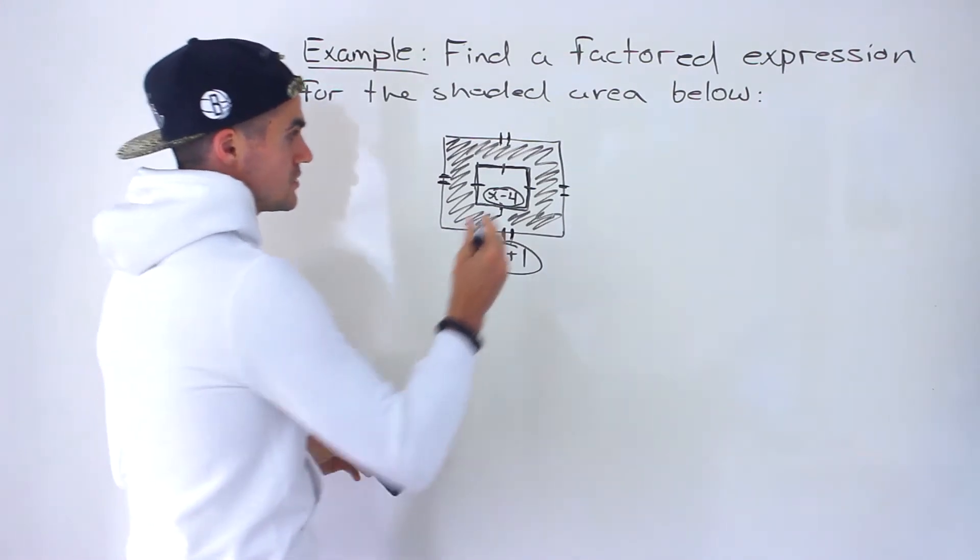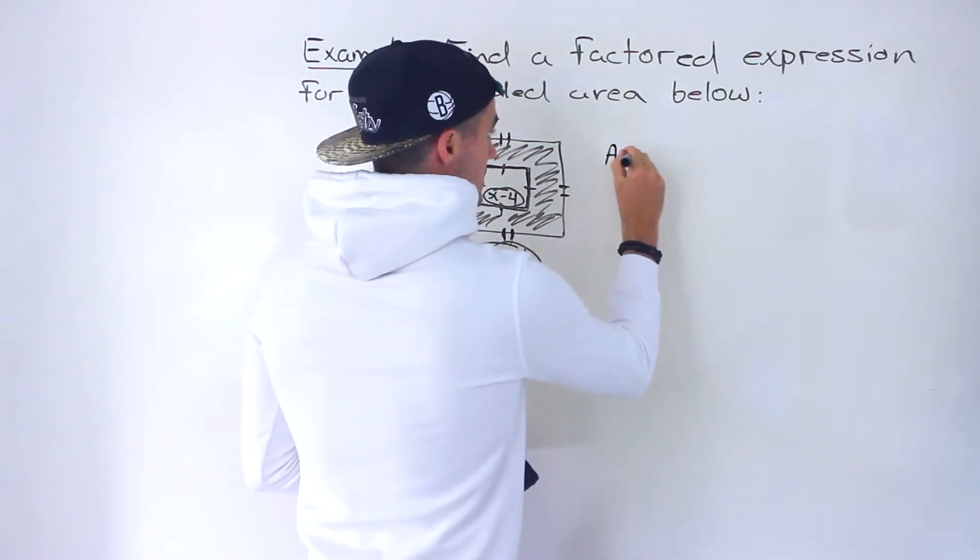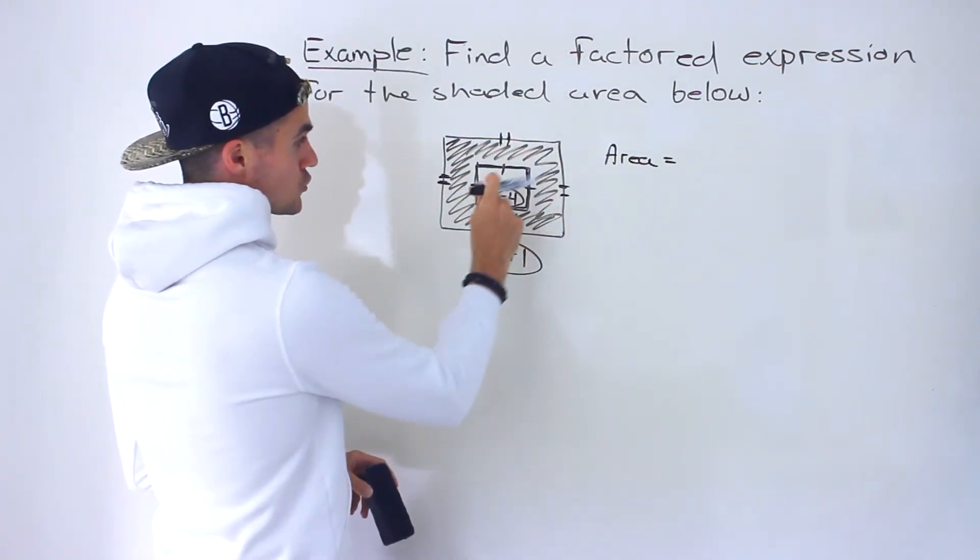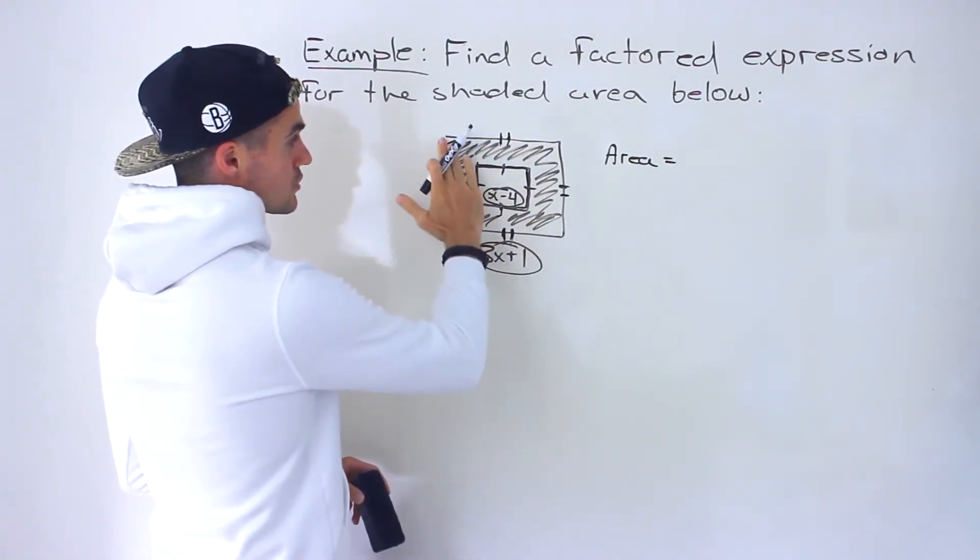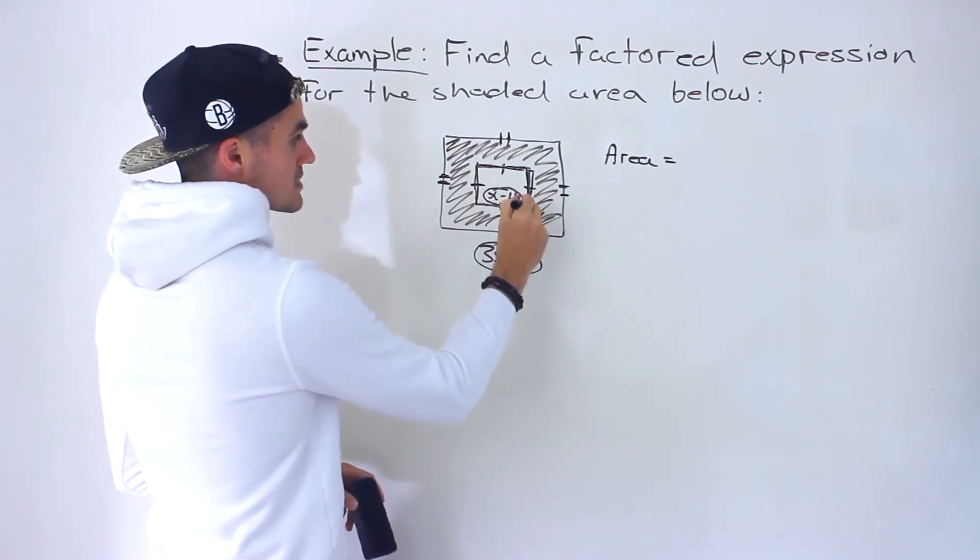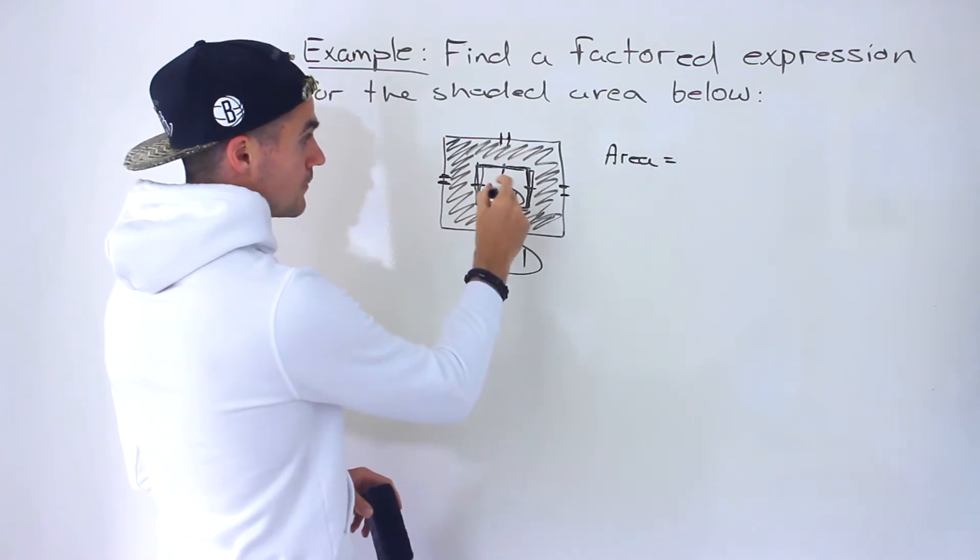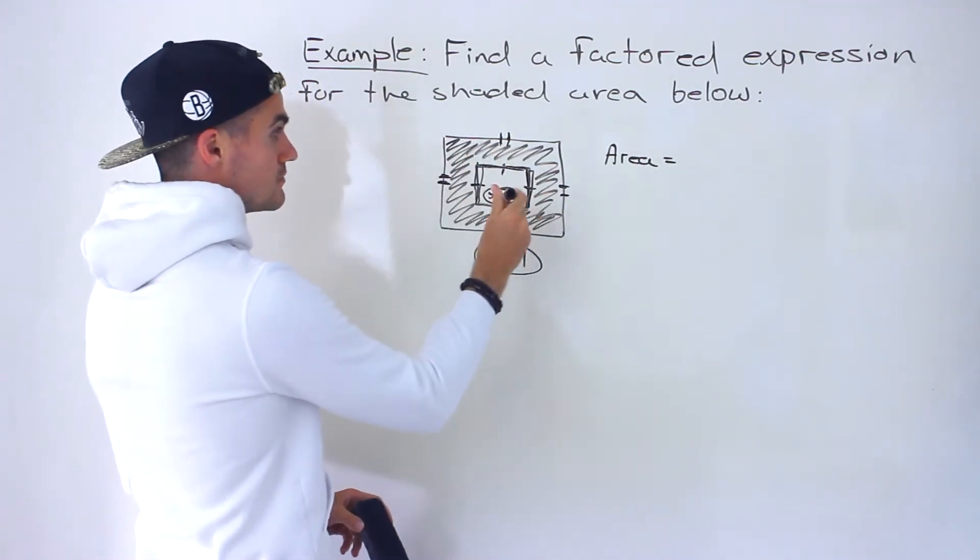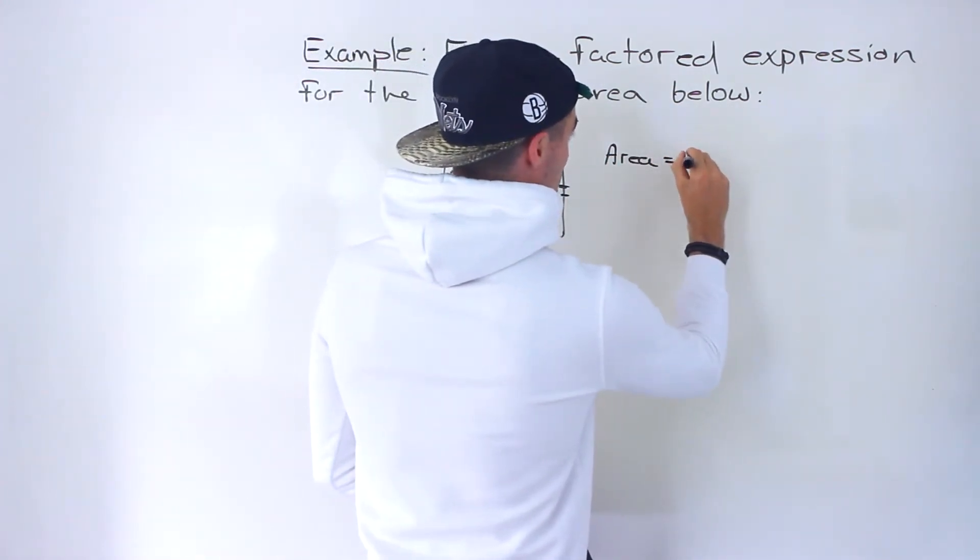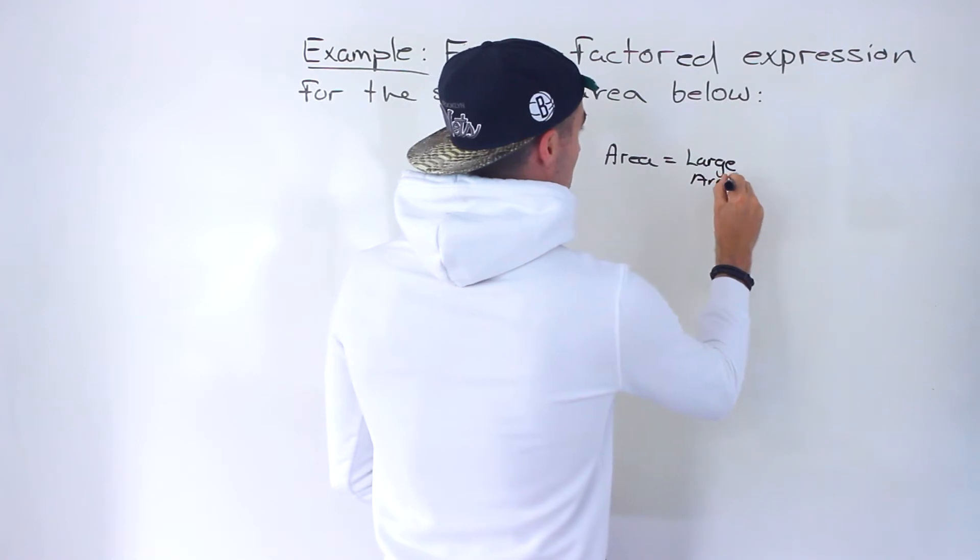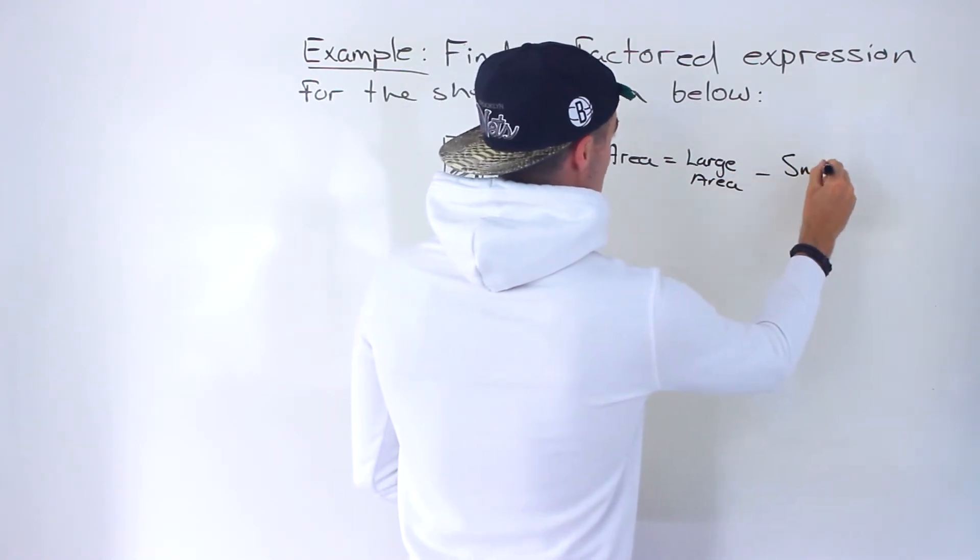What we can do is take the larger area, which would also include this area inside the larger square, and then we could subtract the smaller area of the smaller square. The difference between those is going to give us that shaded area. So the large area minus the small area.